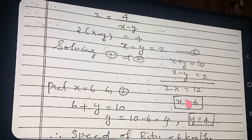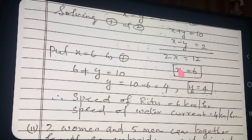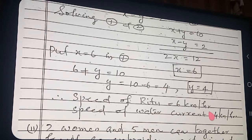Therefore, the speed of Rutu in still water is equal to X = 6 kilometer per hour, and the speed of the current of water is equal to Y = 4 kilometer per hour.